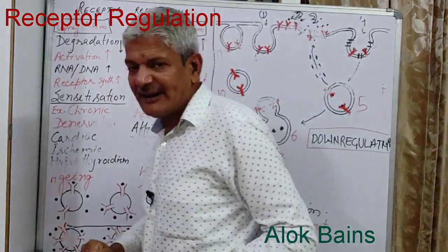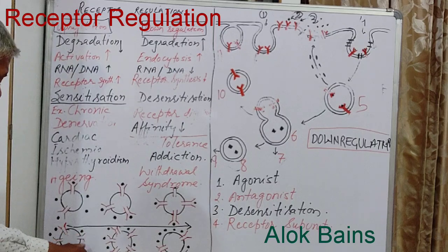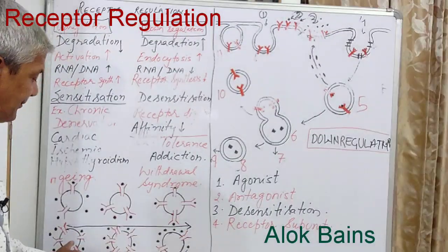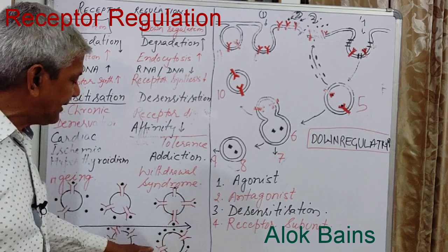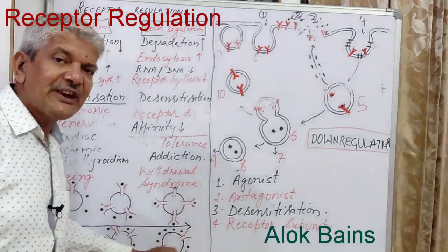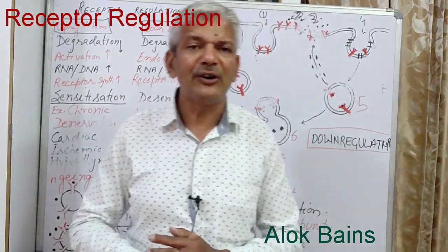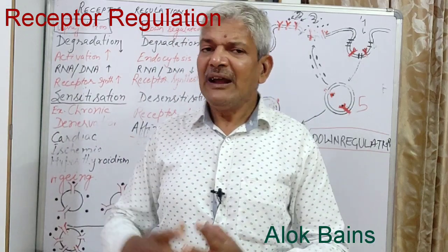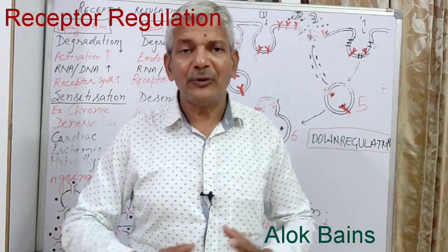In the diagram for down-regulation, there are a large number of receptors and ligands producing a pharmacological or biological effect. In this condition, the cell decreases its number of receptors so that only the required number of ligands can combine to produce the normal biological or pharmacological effect. These are the details of receptor regulation.